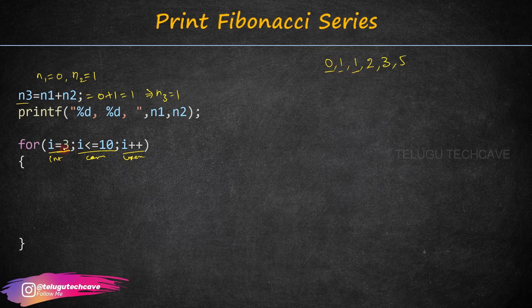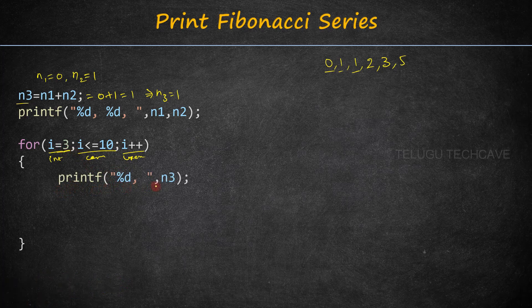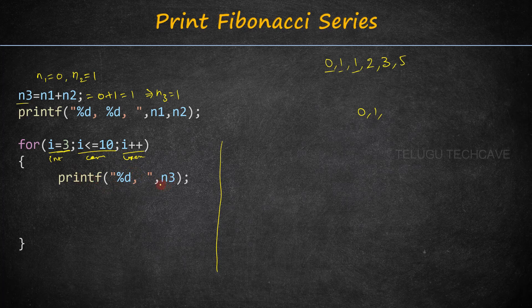So here, i is equal to 3. We use printf with format specifier %d to print n3. First, we print n1 and n2, then inside the loop we printf n3.